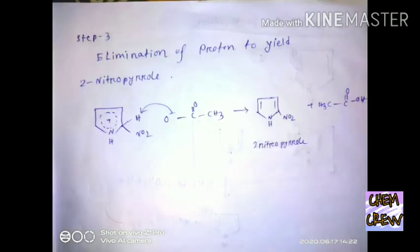So the third step, or last step, is elimination of proton to yield 2-nitropyrrole. And the acid ion which we get from the acetyl anhydride takes the hydrogen and forms acetic acid.